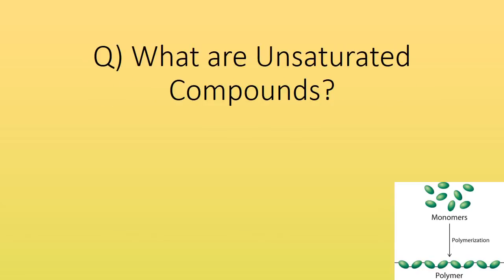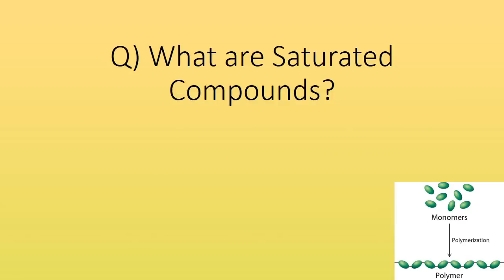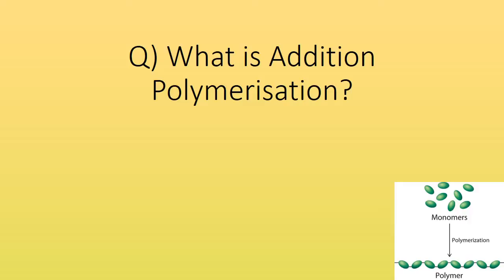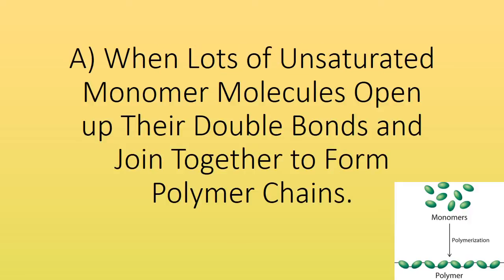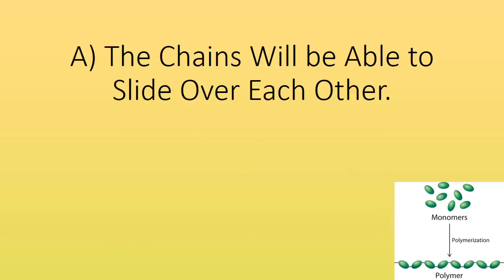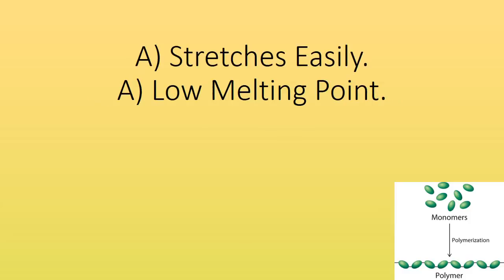What are unsaturated compounds? Molecules with at least one double covalent bond between carbon atoms. What are saturated compounds? Molecules with no double bonds between carbon atoms. What is addition polymerisation? When lots of unsaturated monomer molecules open up their double bonds and join together to form polymer chains. What happens if the plastic is made of long chains held together by weak intermolecular forces? The chains will be able to slide over each other, meaning it stretches easily and has a low melting point.